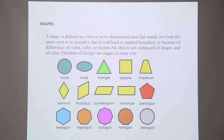There are two types of shapes. One is two-dimensional shape and the other one is three-dimensional shape. Two-dimensional shapes have just height and length, whereas a three-dimensional shape has width, breadth and height.